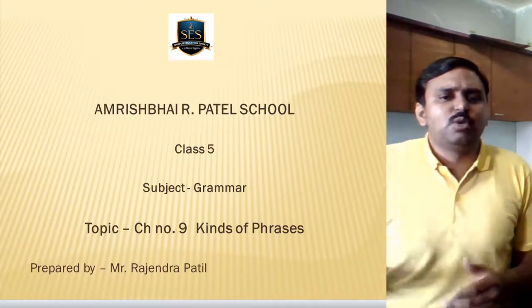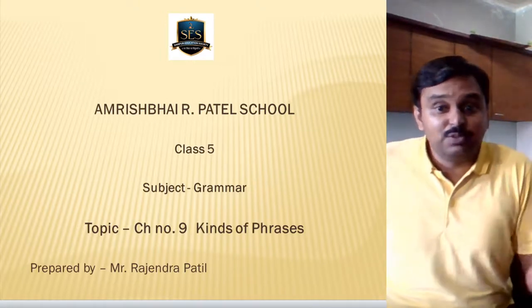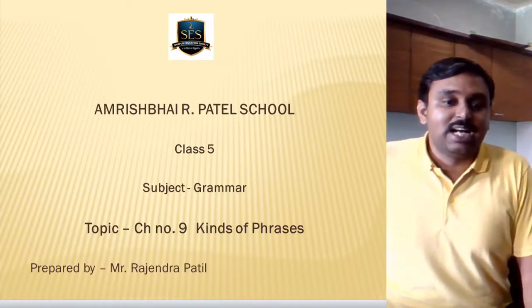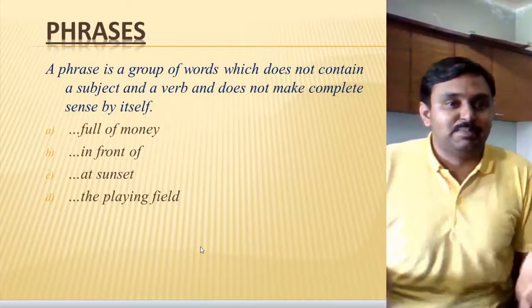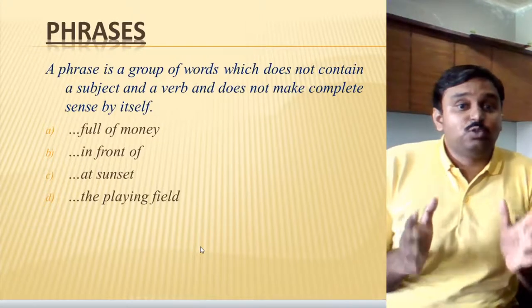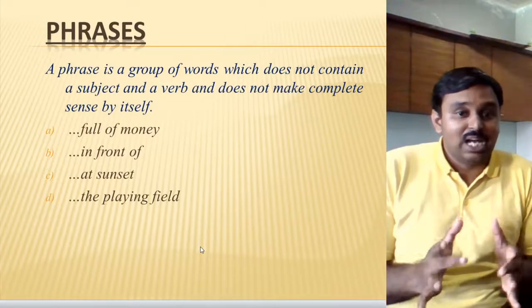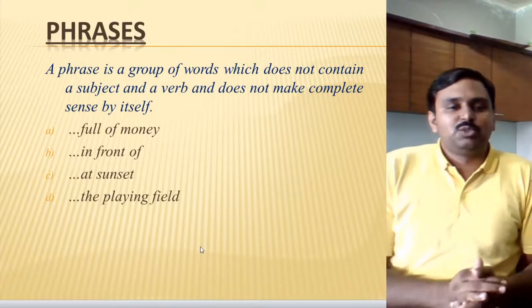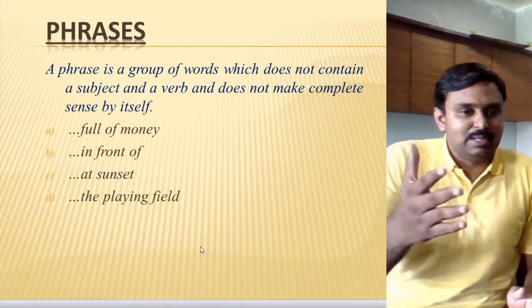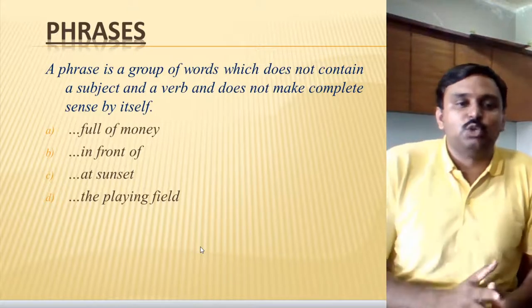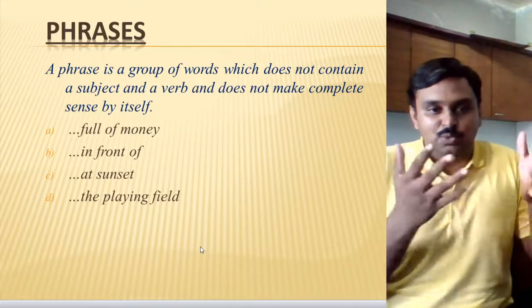So let's know about phrases — exactly what the meaning of a phrase is and its kinds as well. A phrase is a group of words which does not contain a subject and a verb. It means the phrase does not have a subject. If you see the phrase example 'full of money,' in front of it there is no subject like I, we, you, he, she, it.